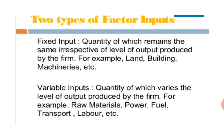Building and land are also fixed. Variable factors are those whose quantity varies with the level of output produced by a firm. For example, raw material, power, fuel, transport facility, and labor are variable factors. I hope you are clear with the concept of fixed factor, variable factor, input, and output.